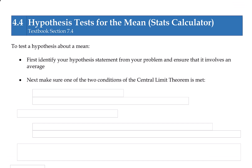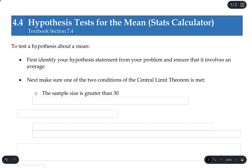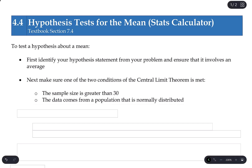We will need to make sure the central limit theorem is met in order to test a hypothesis for the mean. That means either we need a sample size greater than 30 so that the sampling distribution is approximately normal, or the population was originally normally distributed to begin with. We can have a small sample as long as the original population was normally distributed.